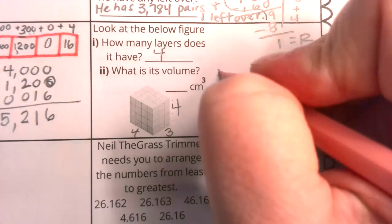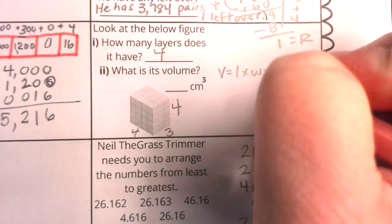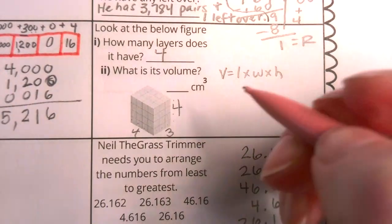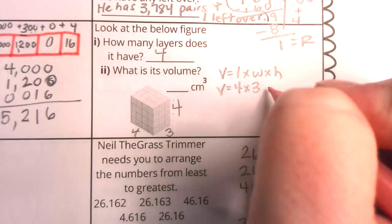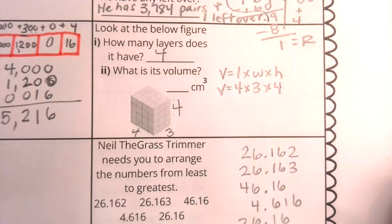So really, boys and girls, we could use the volume formula here. Volume equals length times width times height. And now let's exchange this for a length of four, a width of three, and a height of four.